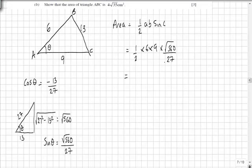Well, 6 times 9 is 54, half of 54 is 27, so we get 27 times the root of 560 over 27. And we can see there that they immediately cancel, leaving us with the root of 560.